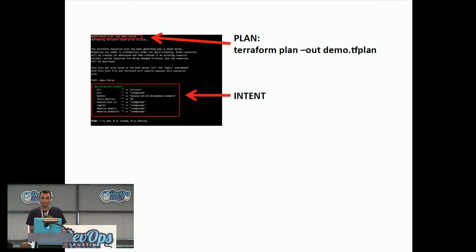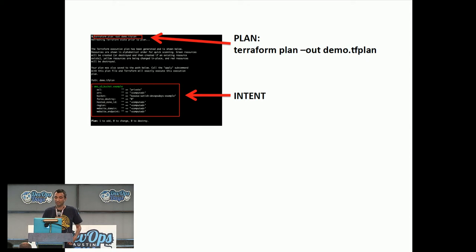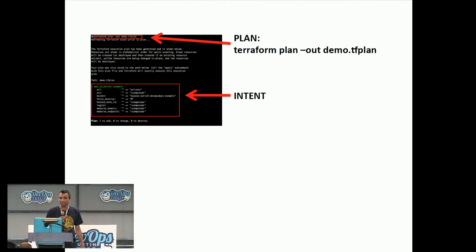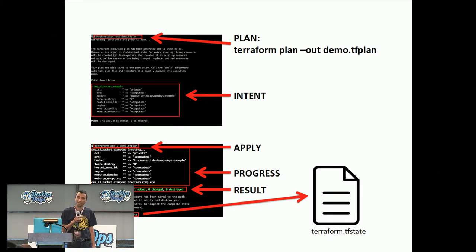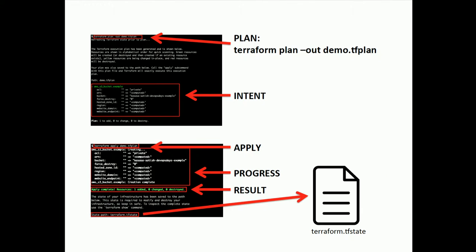Terraform provides the plan command to generate an execution plan. Terraform first performs a refresh and determines what actions are necessary to achieve the desired state in the configuration files. The Terraform apply command is then used to apply the predetermined set of actions generated by the plan command, or you can use the apply command to apply the set of changes directly to reach the desired state of the configuration.